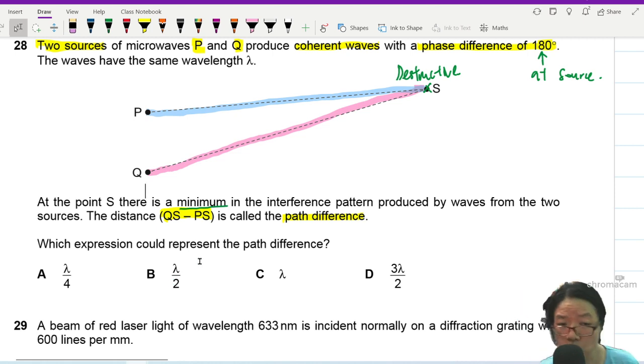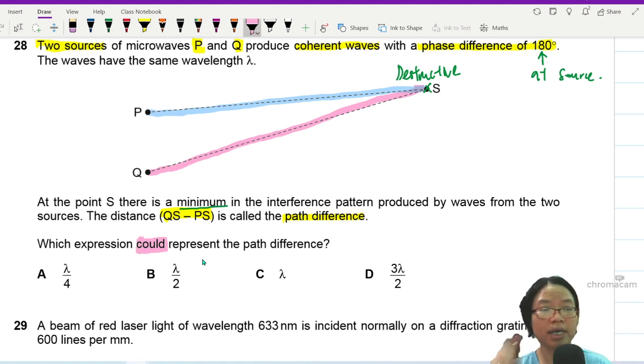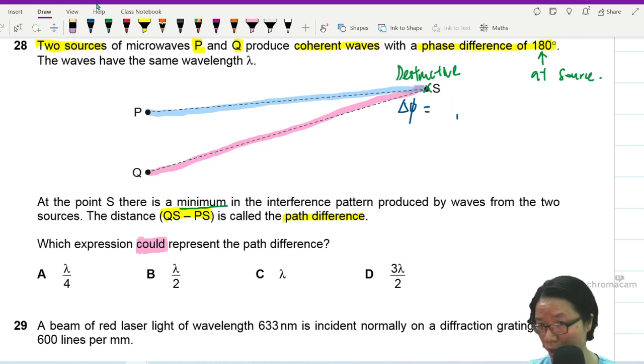Which expression could represent the path difference. So now we need to think about the condition for destructive interference. Destructive interference will always have the same condition for phase angle. So destructive interference the phase angle should be 180 or I prefer to use π. So half a cycle.